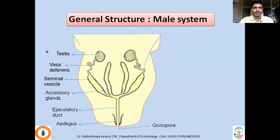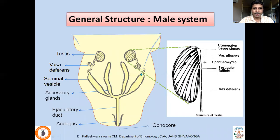The male reproductive system consists of a pair of testes. Each testis consists of a number of testicular follicles. These testicular follicles synthesize spermatocytes which later develop into sperms. The spermatocytes from the testicular follicles move down through small ducts called vasa afferentia. All spermatocytes synthesized within the testicular follicles move into the much larger duct called the vas deferens. The vas deferens is enlarged into a seminal vesicle where sperms are stored temporarily.